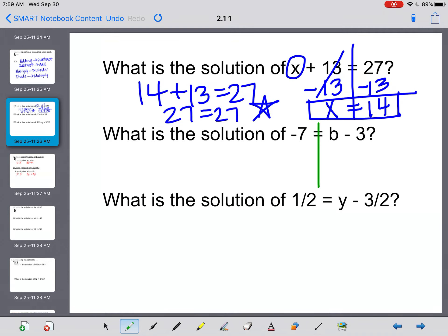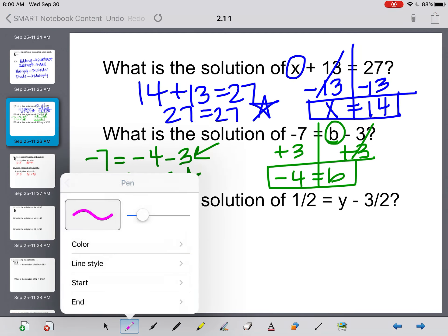What is the solution of -7 = B - 3? I want this B to be by itself, so I have to do the opposite of subtracting 3, which would be adding 3. And a -7 + 3 is -4. So let's see if that works. Is -7 equal to a -4 - 3? Yes, it is. That means we got the right answer. Make sure you actually check to make sure that this is right, and not just write it out and put a star.